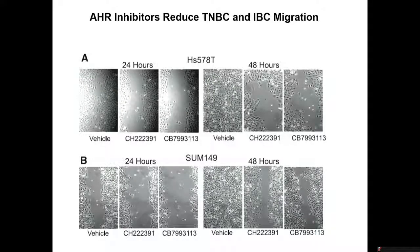Will the drugs we've developed do the same kind of thing? It looks like they do. At 48 hours, the HS57AT triple negative breast cancer line has basically come all the way across the scratch in the control. When you use the gold standard AHR inhibitors, there's a lot of space open — and with our inhibitor, a lot of space open as well. And with the really aggressive inflammatory breast cancer, you can see the same outcome comparing control to each of the inhibitors.